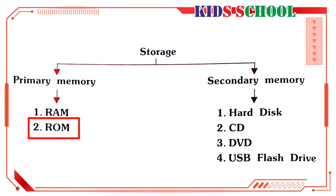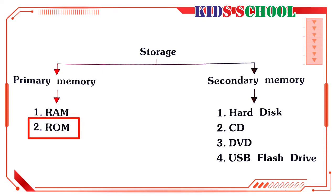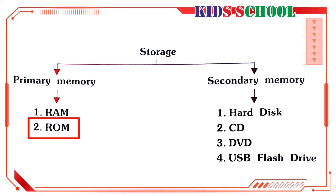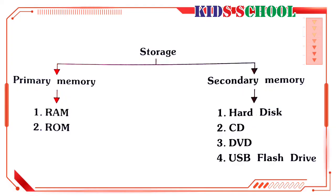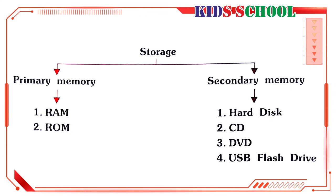As the name suggests, programs in ROM can only be read. The instructions cannot be changed, and they will not be lost even if there is an interruption in power supply or the computer is accidentally switched off. Secondary memory — dear students, secondary memory is also known as external memory.